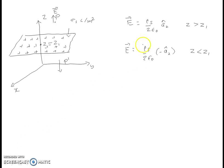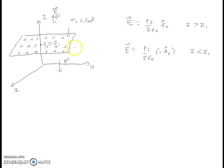Two important observations: the electric field intensity due to an infinite surface charge distribution depends only on the surface charge density and the permittivity of the medium. It is not dependent on the distance of point P from the surface charge. Also, the direction of the electric field is always away from the surface charge, assuming the surface charge density is positive.